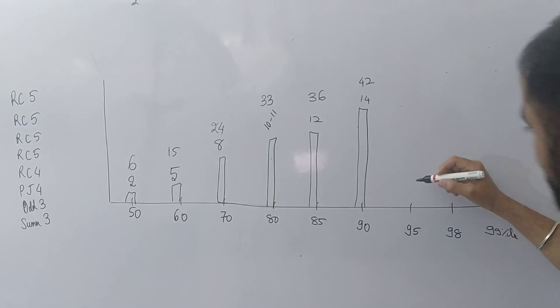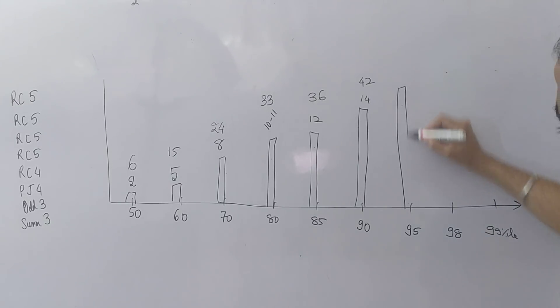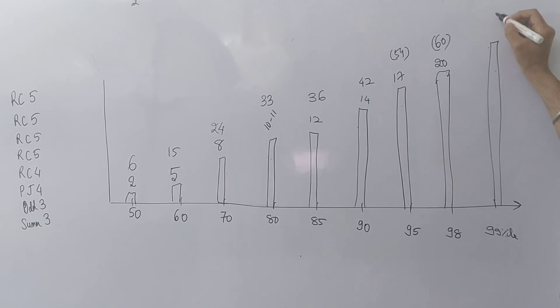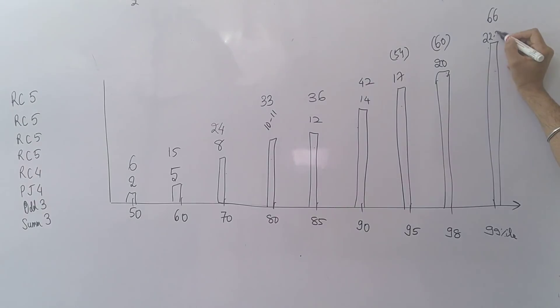Then 90 percentile, where major IIM calls will start, is at 14 questions correct, which is around 42 marks. 95 percentile will be around 17 questions correct, 54 marks you need to score. 98 percentile will be around 20 correct, which is approximately 60 marks.